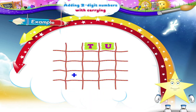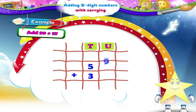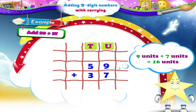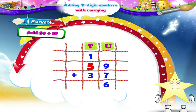In the next example, empty boxes are shown. Fill them appropriately. Add fifty-nine plus thirty-seven. Nine units plus seven units gives sixteen units. Carry over one ten to the tens column. Write six in the units column of the answer. Next add five tens plus three tens plus one ten. We get nine tens. So the answer is ninety-six. Remember: addition can be done by any method, but adding the carried over tens is very important.